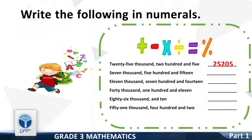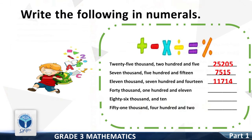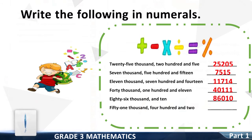Good. The next numeral is 7,515. Good. Next numeral is 11,714. Good. Next numeral is 40,111. Good. Next numeral is 86,010. Good. Next numeral is 51,115, and 51,402.